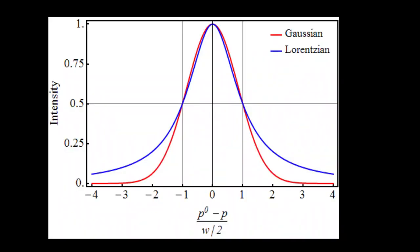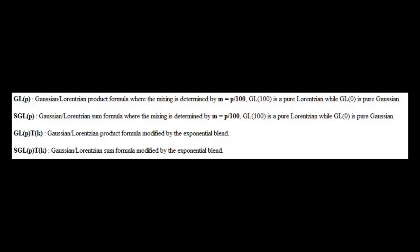So our next step, which should be your third step, is line shape. There are two basic peak shapes: Gaussian and Lorentzian. But in most experimental cases the shape is in between Gaussian and Lorentzian. Thus the line shape is described by the Voigt function. The Voigt function can be in two forms: product form and sum form. Additionally, the line shape can be asymmetric and exponential. GLP is a Gaussian-Lorentzian product formula where the mixing is determined by M = P/100. For example, GL100 is a pure Lorentzian while GL0 is pure Gaussian.